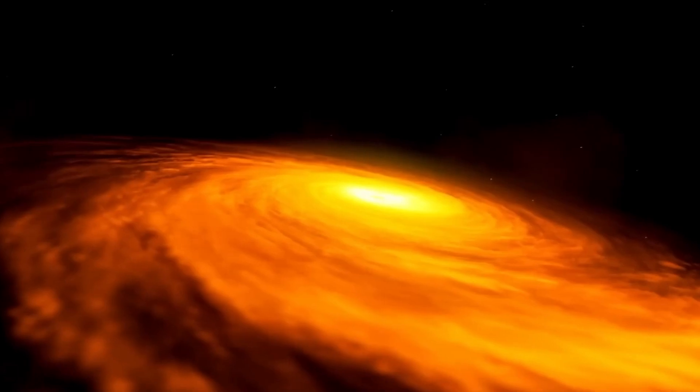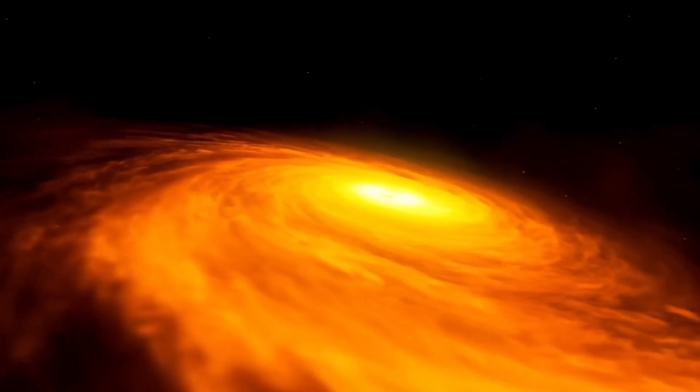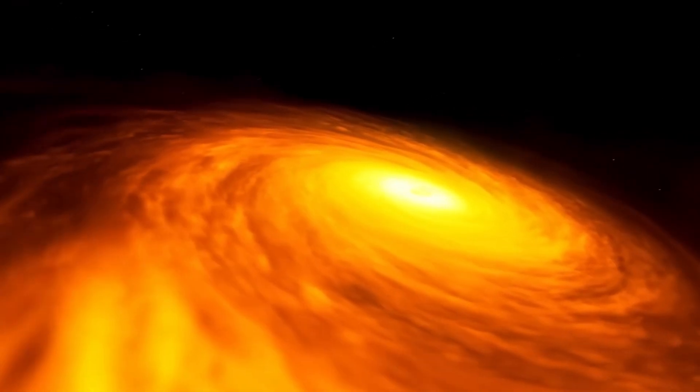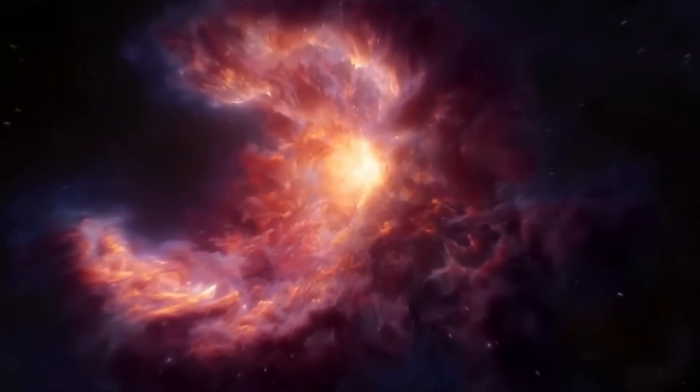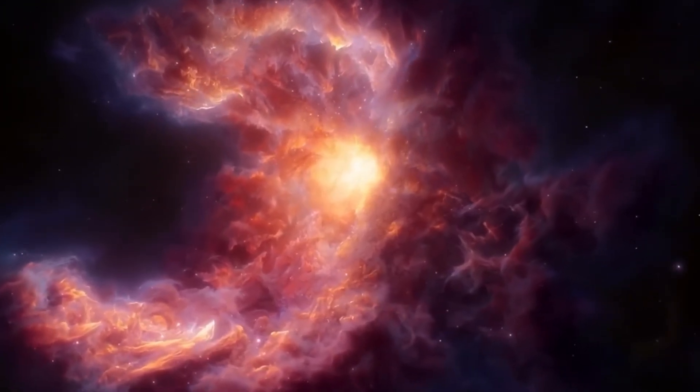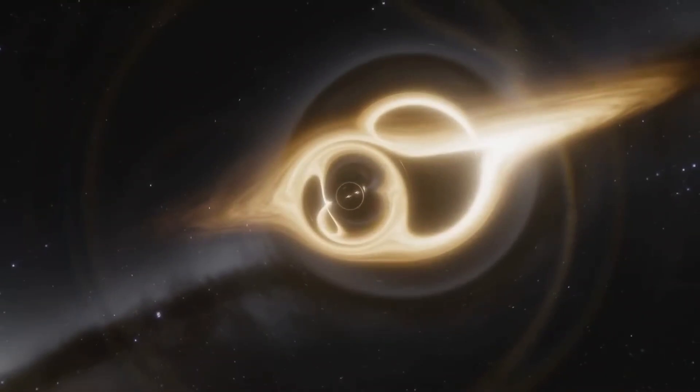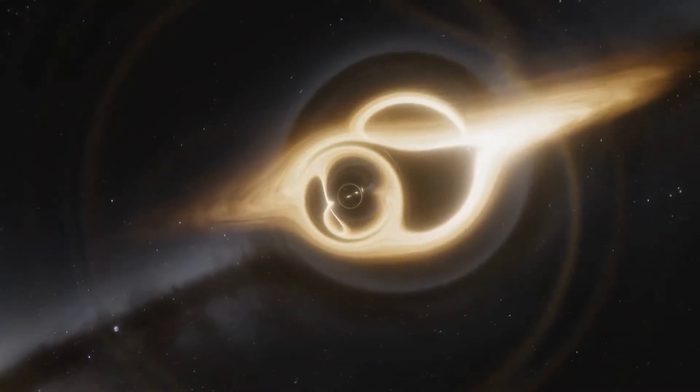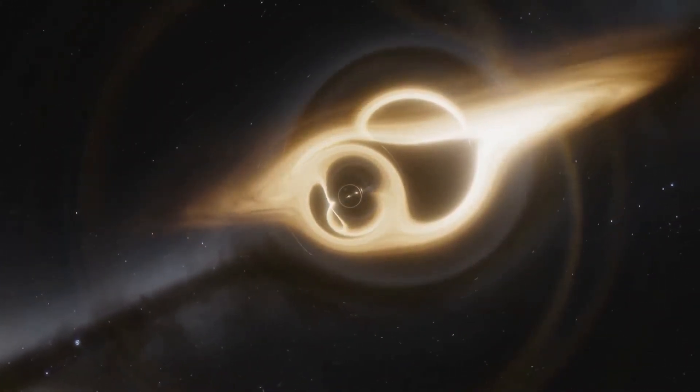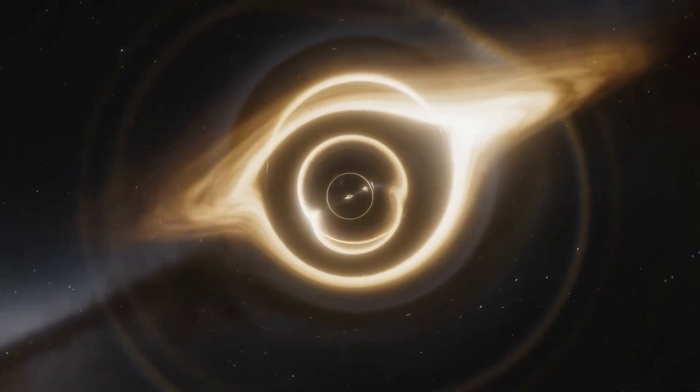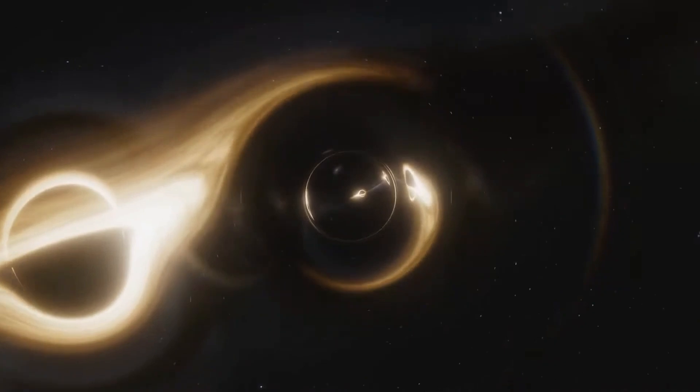Black holes are known for their insatiable appetite, devouring anything that gets too close. In this case, the ravenous cosmic feast of the black hole, something truly extraordinary happened. When matter fell into the black hole, it was heated to extreme temperatures, reaching millions of degrees. This searing gas created a bright corona around the hole, forming a strong cosmic halo.